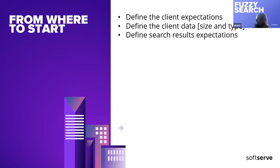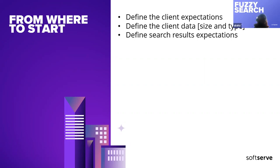So let's start from the beginning again on how we can start this type of feature the correct way. We will need first to define the client expectation as the first point, so we can understand how deep he wants to go with this feature. Also, we should understand: is this a new project, or does he already have a database — is this a new project or one that's already existing where he wants to add search functionality?